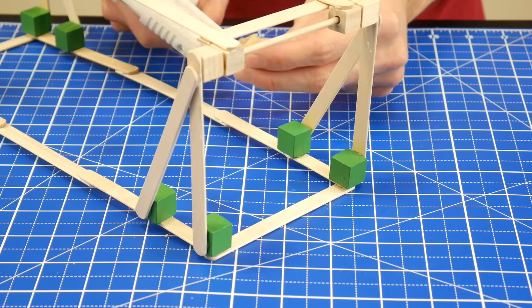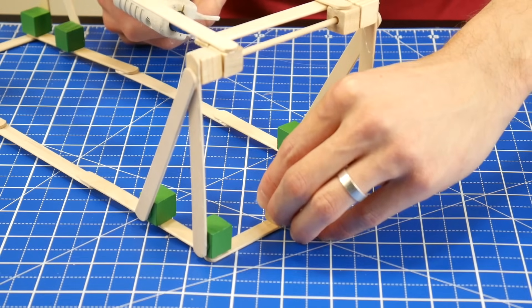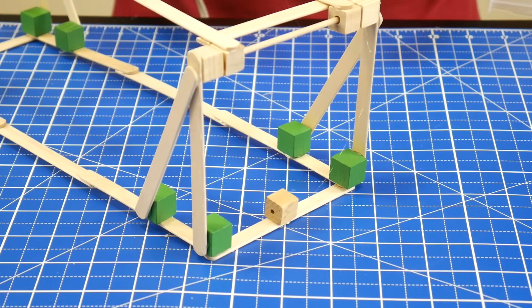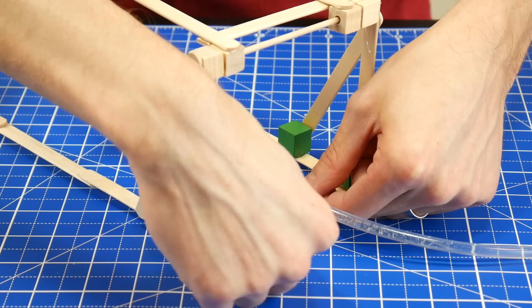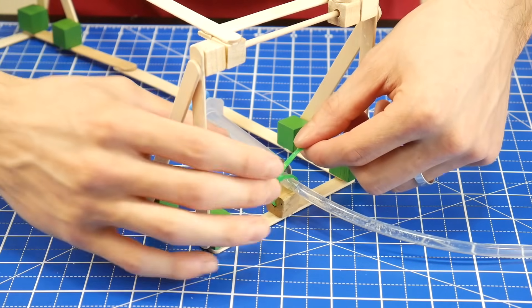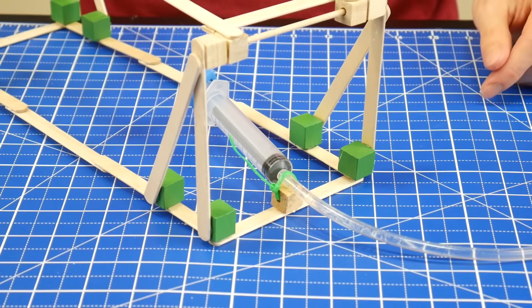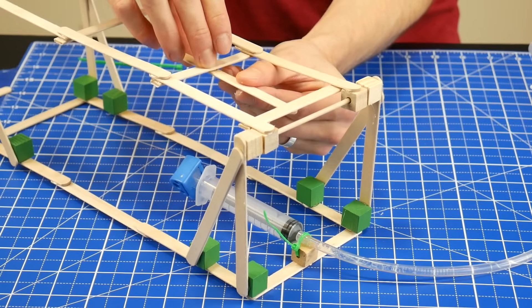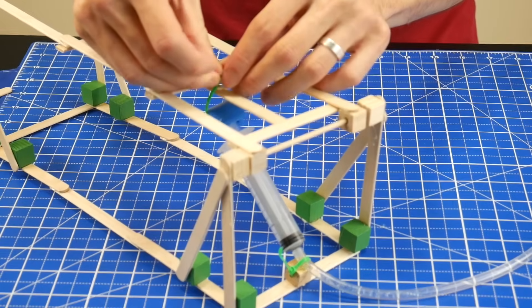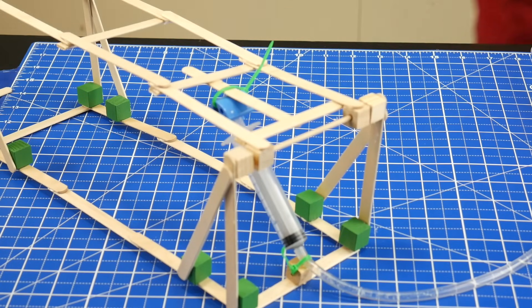To attach the hydraulics to the bridge, first glue on a cube with holes under the hinge. Next, use a cable tie to strap the nozzle of the syringe that has the adapter to the cube. Next, glue a craft stick to the middle of the bridge frame, and then tie the adapter to it using another cable tie.